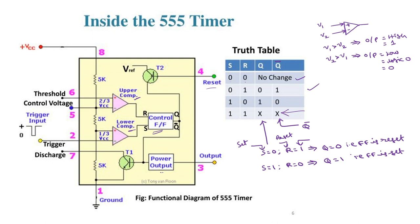The RS flip-flop output Q-bar is connected to a power output stage that acts as an inverter. For this inverter, the input is Q-bar, so the output is Q-double-bar, which equals Q itself. This means the output of the 555 timer IC is the same as the output Q of the SR flip-flop. There is also a transistor to reset the 555 timer and a discharge transistor.